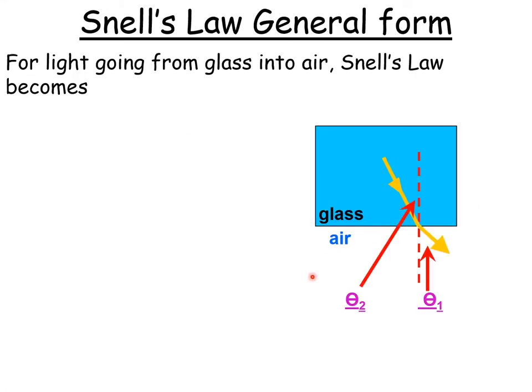So first of all, how do we get the general form of Snell's Law? If we look at a diagram, we've got a glass and we've got a light ray going from the glass into the air. Notice that theta 2 is now the angle of incidence and theta 1 is the angle of refraction. So this is where you have to be really clear that theta 1 or 1 is always for the angle in the air and 2 is always the angle for the material, usually glass. Now if we write this out, then we get n2 over n1 is equal to sine theta 1 over sine theta 2.